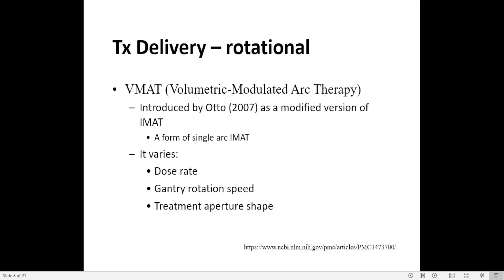Nowadays we have VMAT, Volumetric Modulated Arc Therapy. It was first introduced by Otto in 2007 as a modified version of IMAT — a form of single-arc IMAT. With VMAT, a satisfactory dose distribution can be achieved with a single arc; it doesn't need several arcs anymore. VMAT requires precise synchronization of LINAC gantry rotation with MLC motion and radiation delivery.